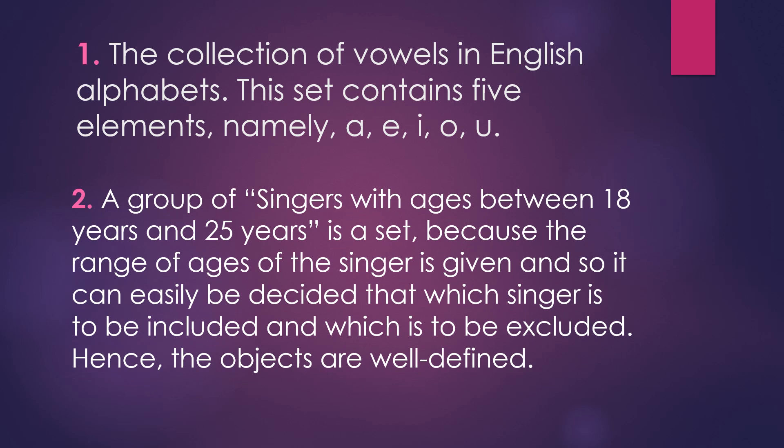The second example is a group of singers with age between 18 years and 25 years — this is a set. The range of age of the singer is given, so it can easily be decided which singer is to be included and which is to be excluded. The individual can easily decide, and the objects are well defined.